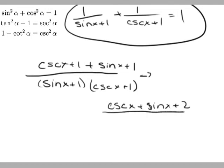and then simplify the bottom, which you foiled that out, equals sine x cosecant x.